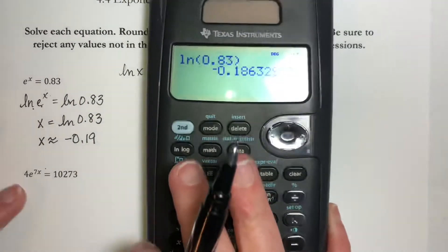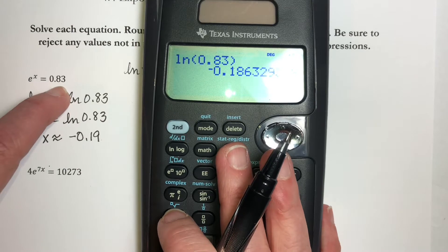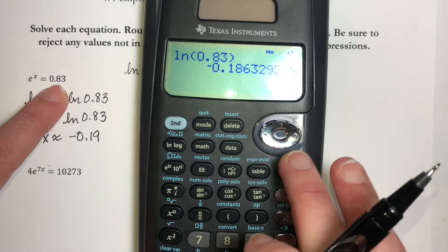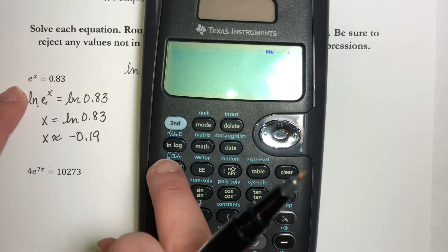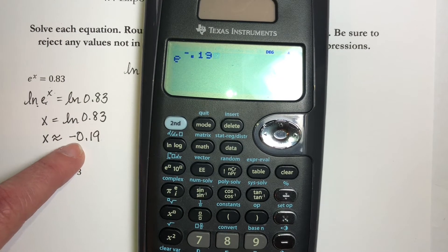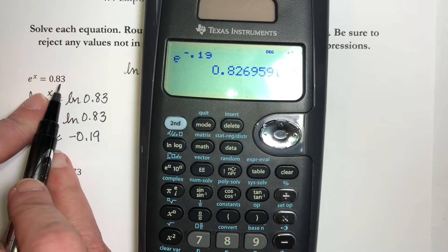You could take this approximation and plug it in right here. You won't get exactly this because this is an approximation, but you should get something close. If I do e^(-0.19), let's see if I get something close to this. And I do, and it rounds to this. It should be reasonably close.